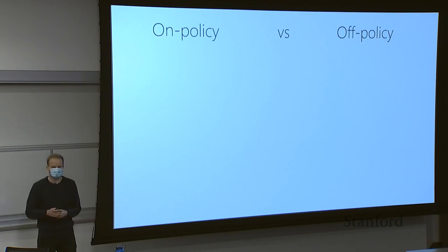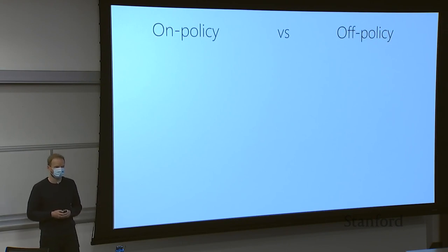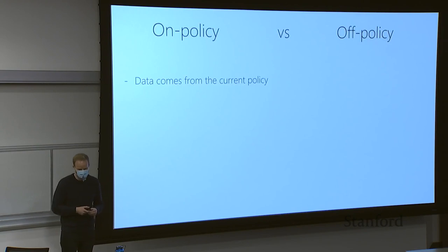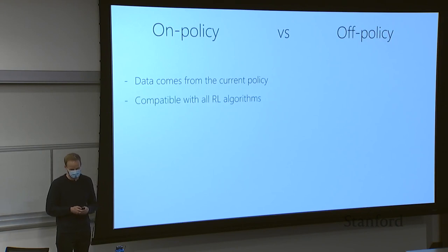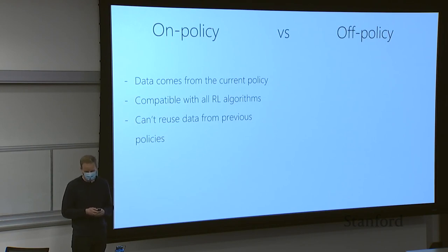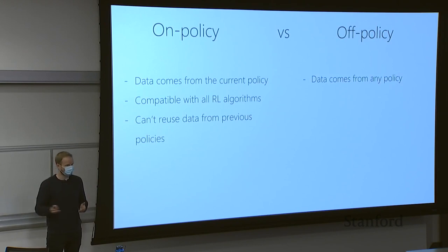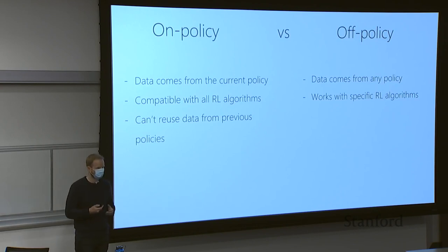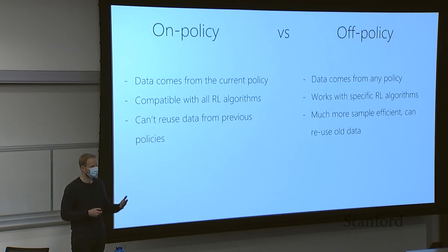We can use some of the algorithms we already know. We've learned about two types of reinforcement learning algorithms: on-policy and off-policy. For on-policy algorithms, data has to come from the current policy — we constantly collect data with the freshest policy and can't reuse data from previous policies. For off-policy algorithms, data can come from any policy; it works with specific RL algorithms such as value-based methods, and it's much more sample-efficient because we can reuse all data and do multiple gradient steps on the same data.